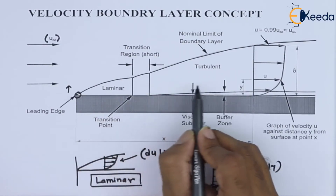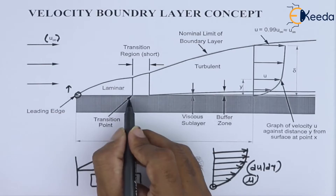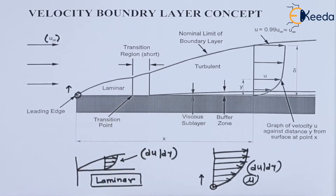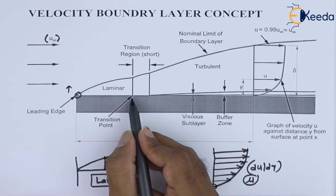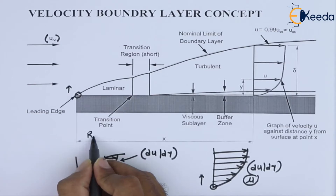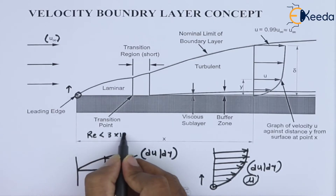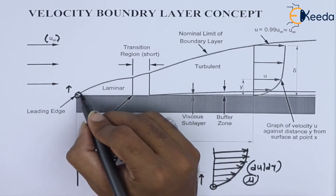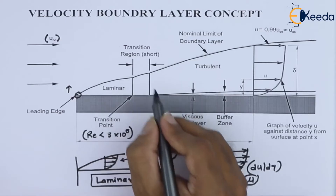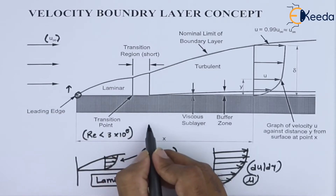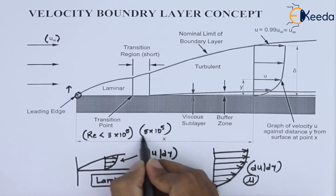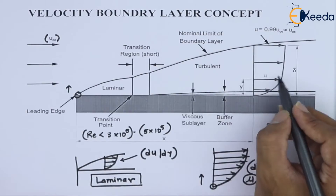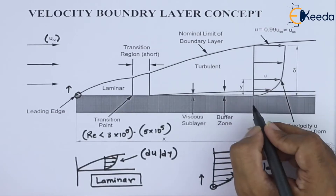For the flow over a flat plate, if the Reynolds number is less than 3×10⁵, then we are having a laminar flow, and for laminar flow the boundary layer will look something like this. The transition flow is in between 3×10⁵ and 5×10⁵. If the Reynolds number is in between this range, we are in the transition region. Beyond that we have a turbulent region, and the velocity boundary layer is shown for the turbulent region as well.